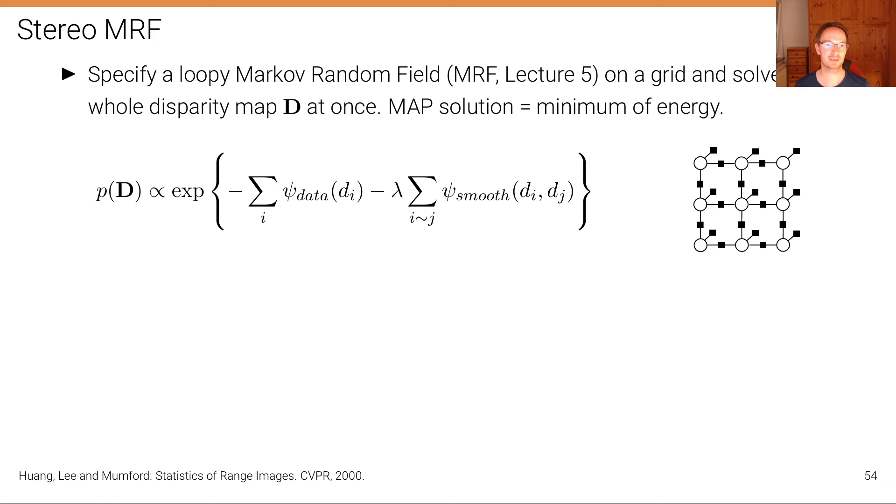And the way we do that is by specifying a loopy Markov Random Field or short MRF that will be discussed in more depth in lecture five. And we specify that Markov random field on a grid where the nodes in that grid are the pixels, and these little squares are constraints on that pixels. And then we solve the whole disparity map D, which is these pixels at once, where the map solution is the solution with the minimum energy. So we can think of this as an energy minimization problem, because the probability of the disparity map is proportional to a so-called Gibbs distribution.